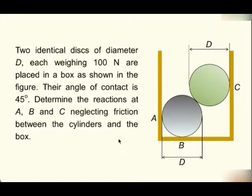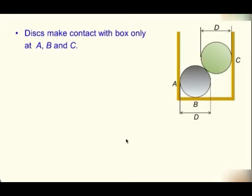Neglecting friction between the cylinders and the box. Just to make your life simple, we have removed friction. My focus here is to get a good habit on how to draw free body diagrams. And what is the kind of solution procedure I would like you to have? First of all, we have to recognize that disks make contact with box only at A, B and C.